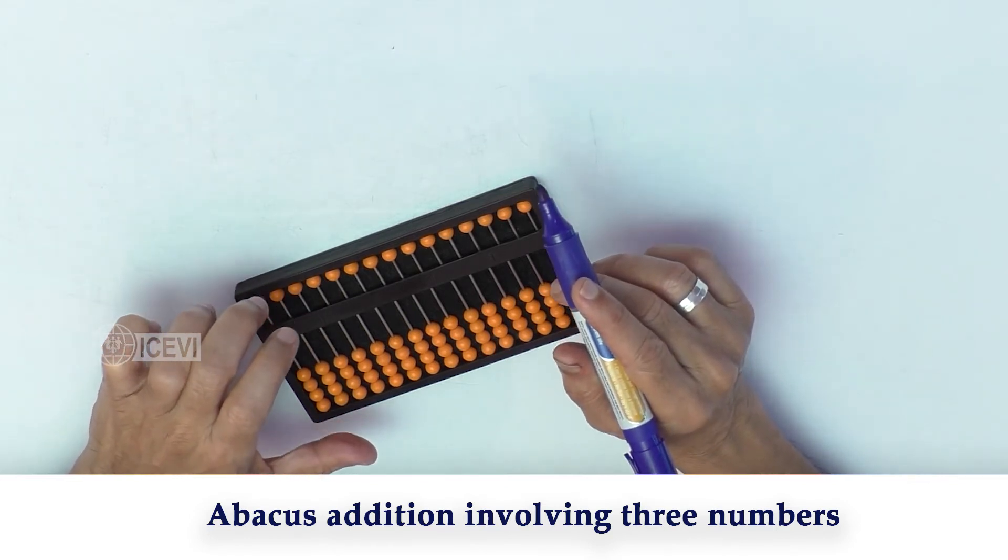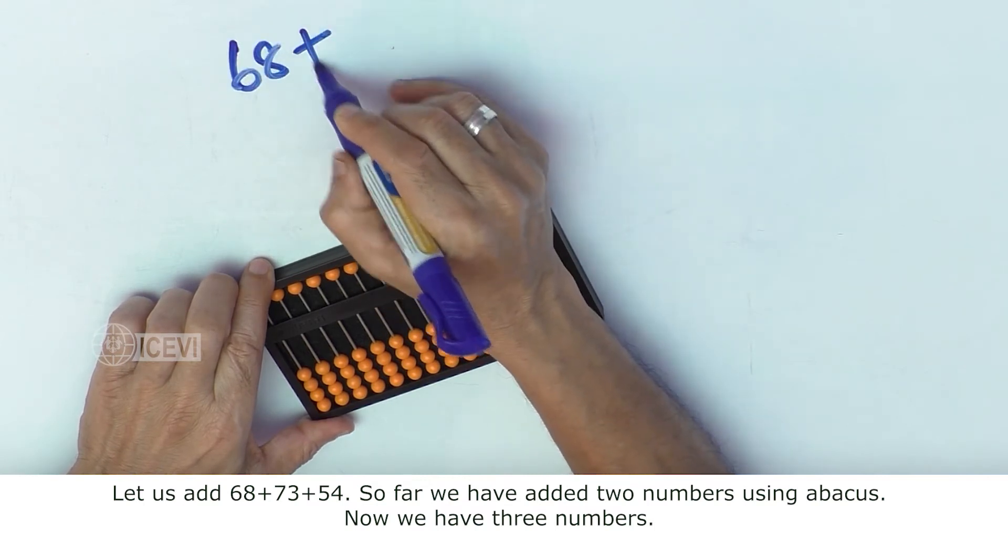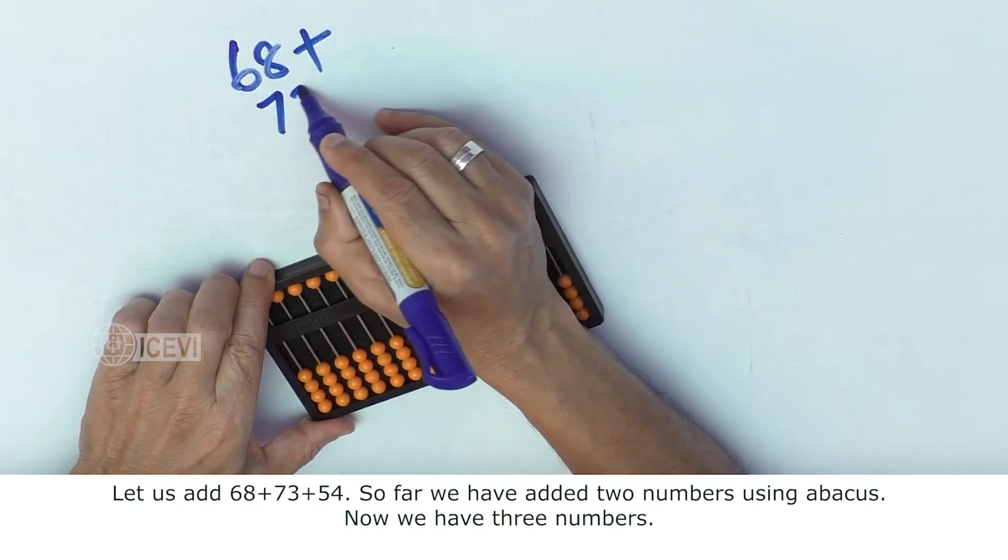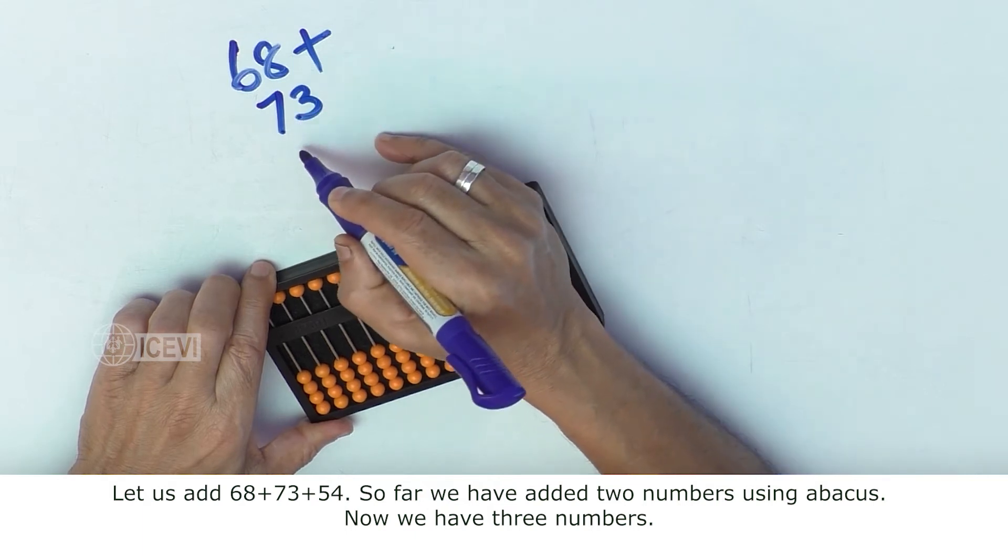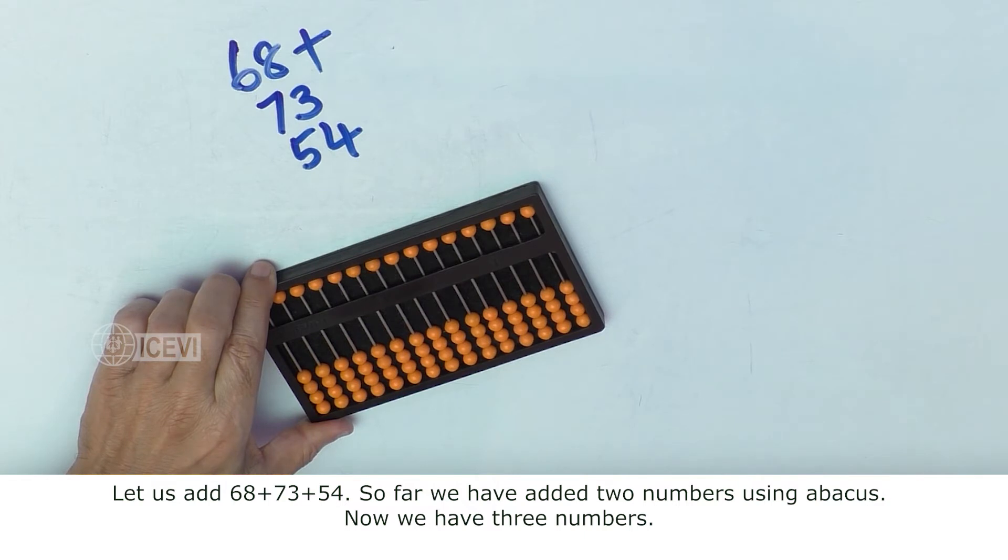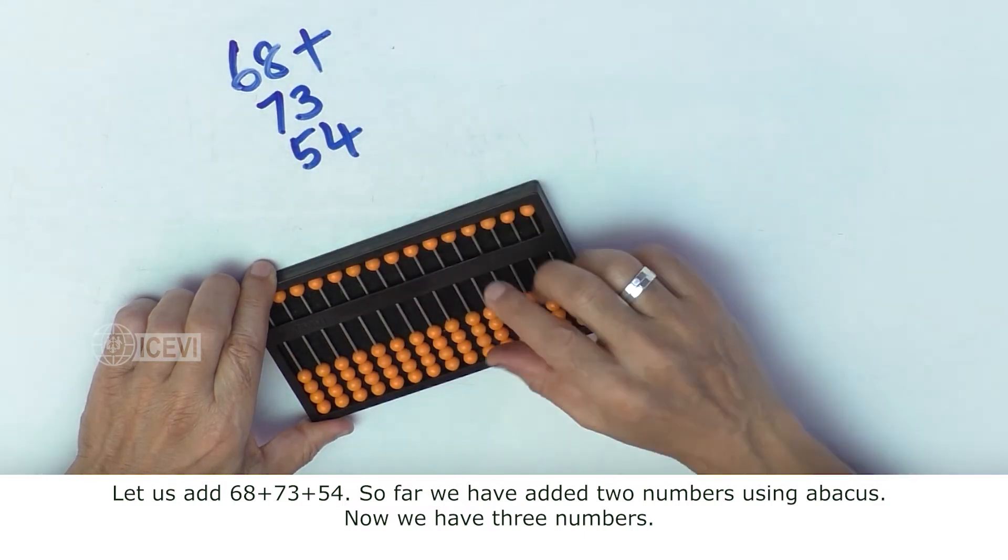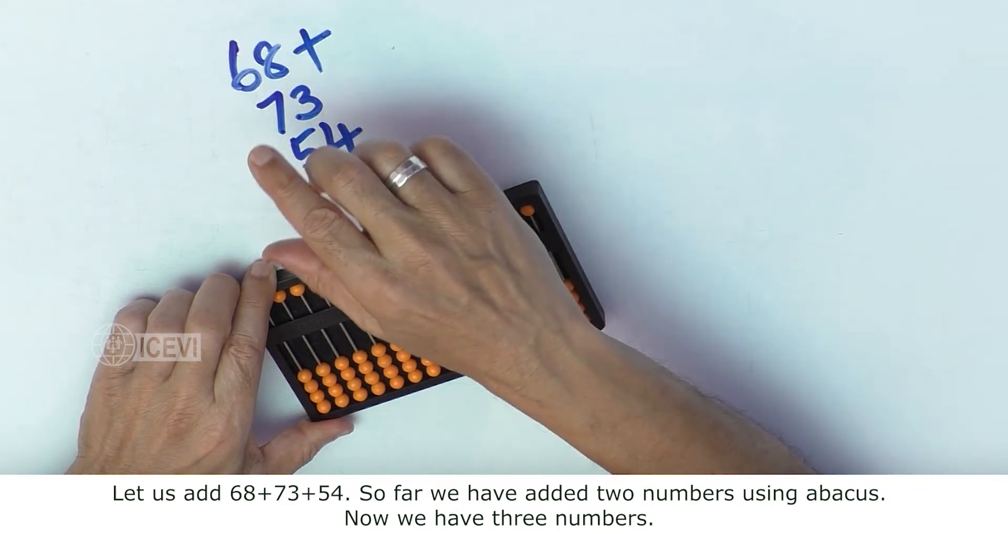Let us add 68 plus 73 and 54. So far we have added two numbers using the Abacus. Now we have three numbers.